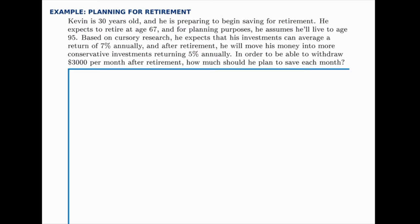So there'll be two parts to the problem. In the first part, we will find the balance needed at the moment of retirement. So from this, we can work backwards from the fact that Kevin wants to withdraw $3,000 a month.